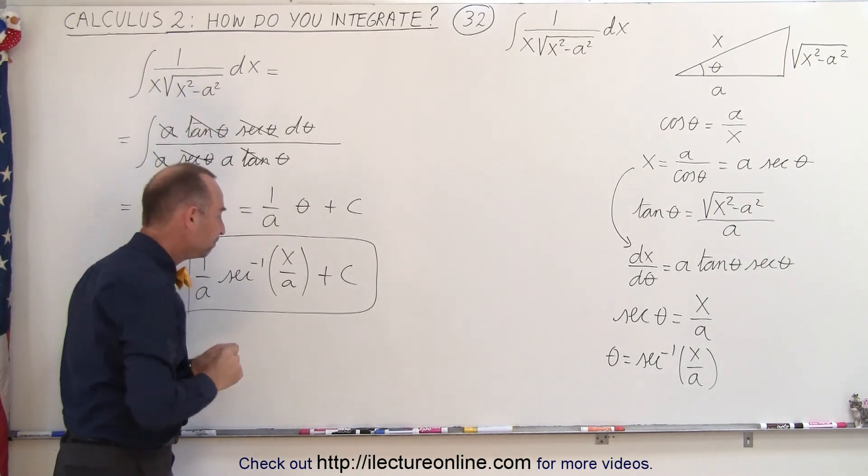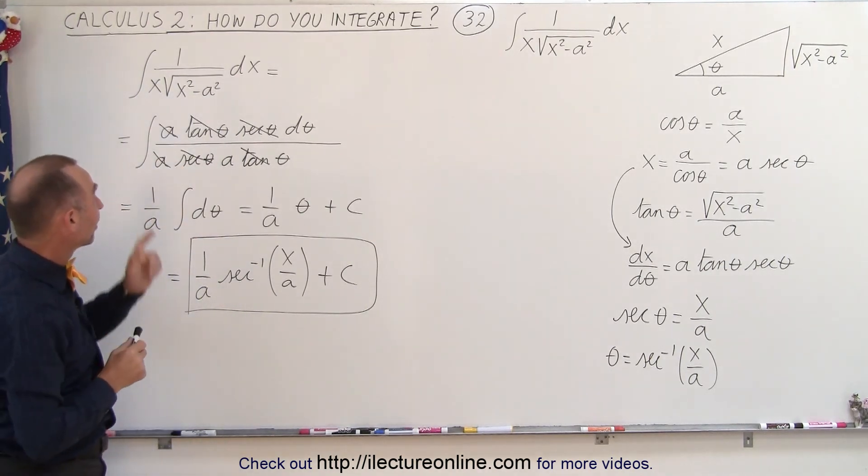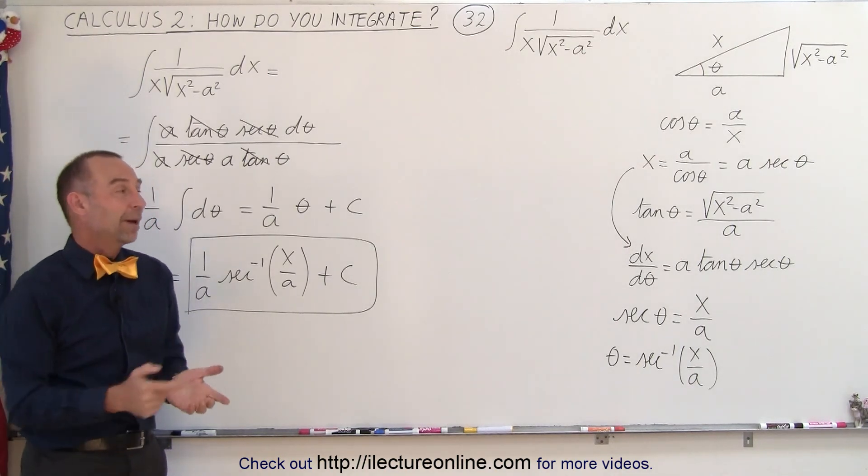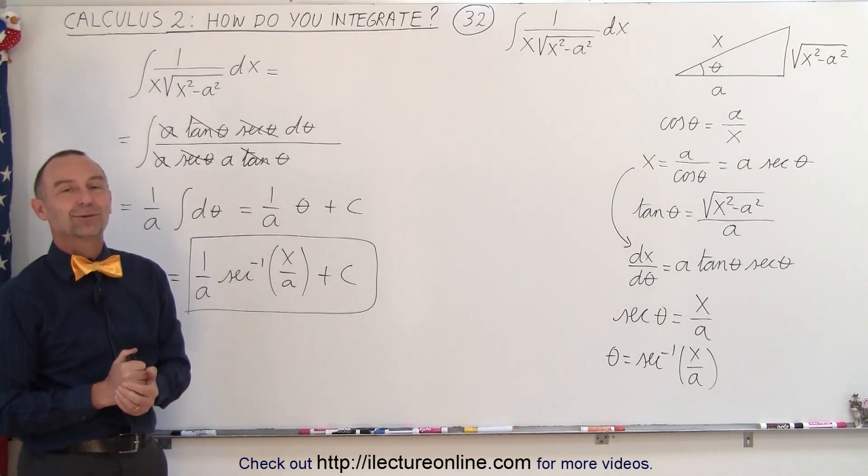And there we have it. That's how we find the integral of 1 over x times the square root of x squared minus a squared. Not so bad once we do trig substitution.